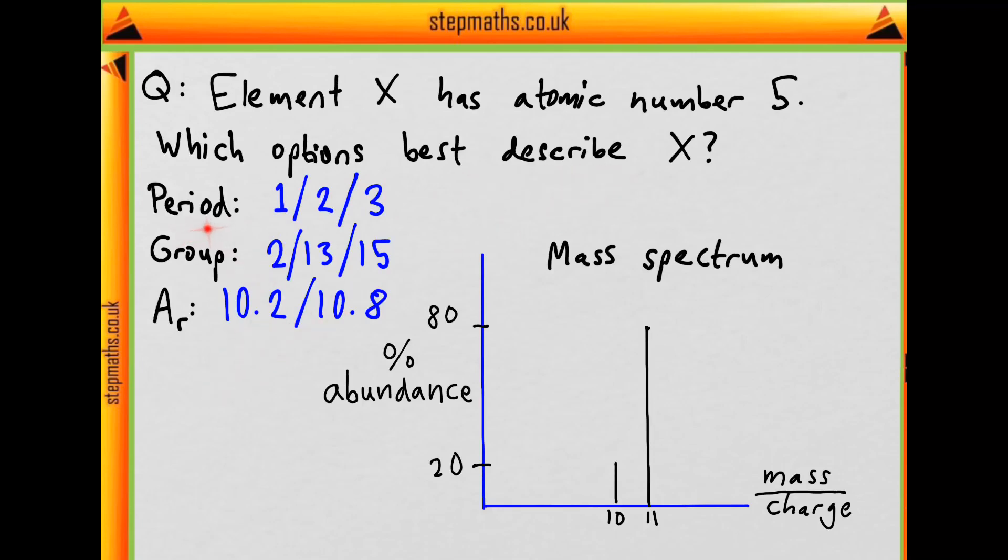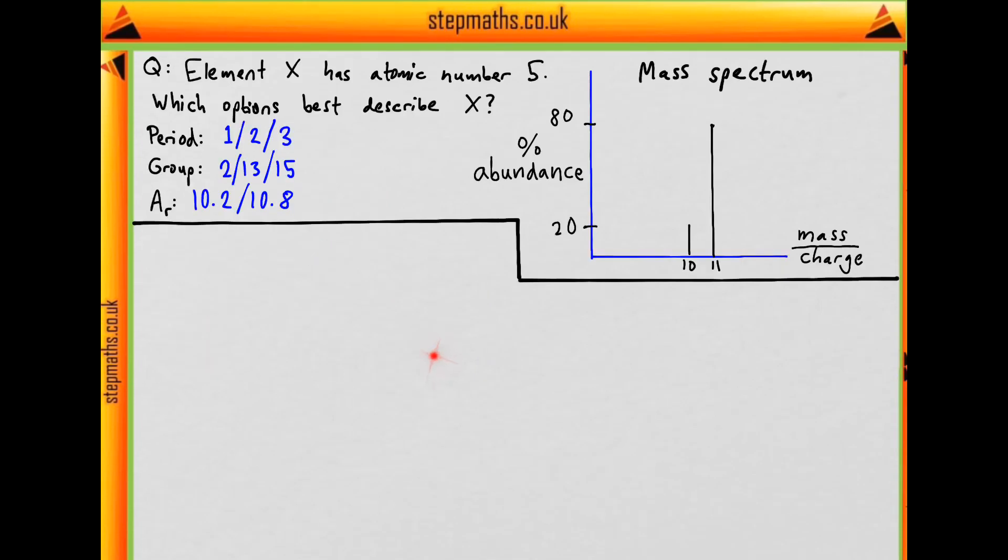We need to find the period, the group, and the relative atomic mass. Before we worry about the mass spectrum, we should be able to work out the period and group that element X is in. How do we do this?